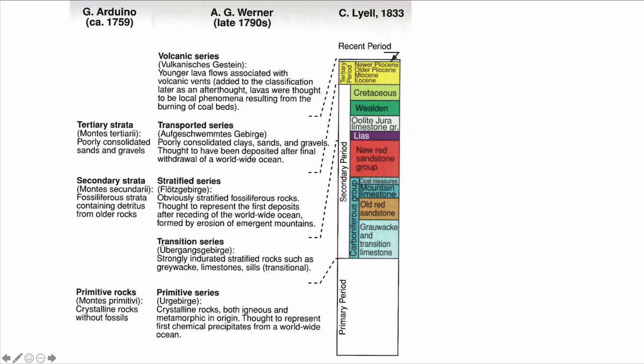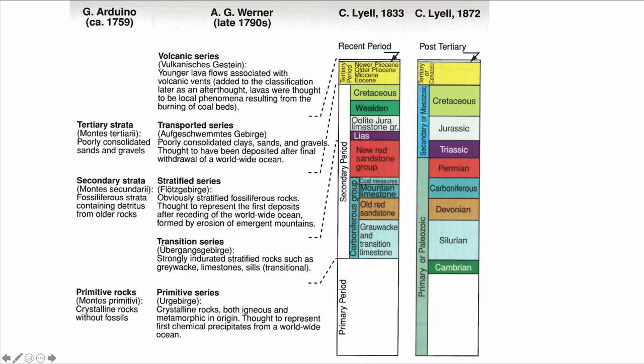When we talked about chronostratigraphy, we noted that later in the 1870s he refined this subdivision using the proportion of fossils. He published a stratigraphic time chart that now looks relatively modern, with the Cambrian, Silurian, and Devonian of Sedgwick and Murchison. And on top of this, he has the Permian, Triassic, Jurassic, Cretaceous, and the tertiary.